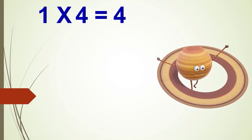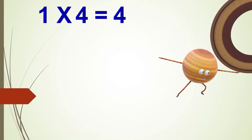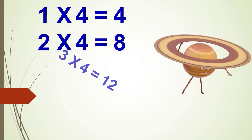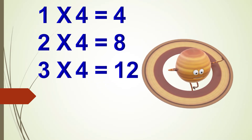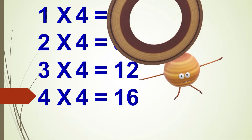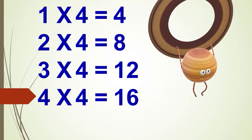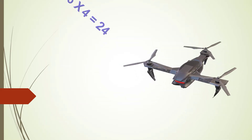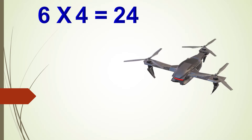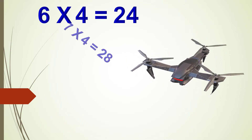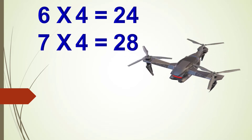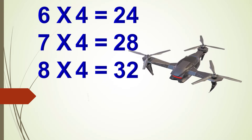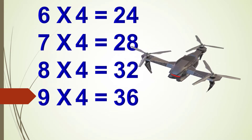1 x 4 is 4, 2 x 4 are 8, 3 x 4 are 12, 4 x 4 are 16, 5 x 4 are 20, 6 x 4 are 24, seven times four are 28, eight times four are 32, nine times four are 36, ten times four are 40.